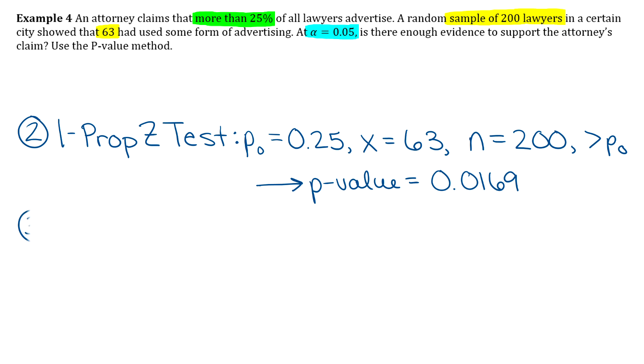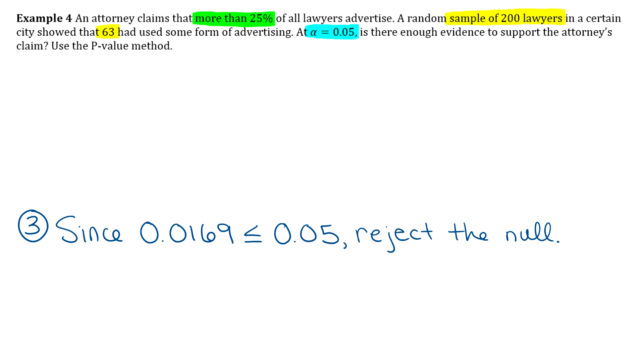Okay. Step three, we just need to compare that p value with alpha. So 0.0169 is definitely less than or equal to 0.05. So when p is less than or equal to alpha, we reject the null hypothesis. And let's see, we're rejecting the null. The claim is in the alternative. So by rejecting the null, I'm supporting the claim. So I say that there is enough evidence to support the claim.